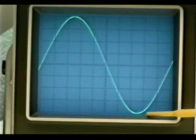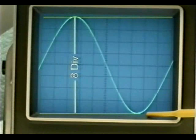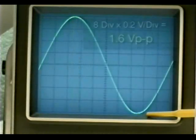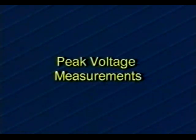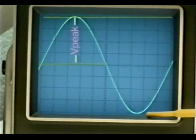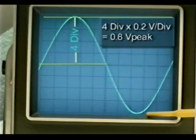There are three common sine wave voltage measurements: peak-to-peak, peak, and RMS (root mean square). In this example, the waveform occupies eight divisions of vertical deflection from the uppermost positive peak to the lowermost negative peak. With the vertical attenuator set to 0.2 volts per division, eight divisions gives a 1.6 volt peak-to-peak amplitude. The sine wave's peak voltage is simply half of the peak-to-peak value — four divisions from the center reference multiplied by 0.2 volts per division gives 0.8 volts peak.